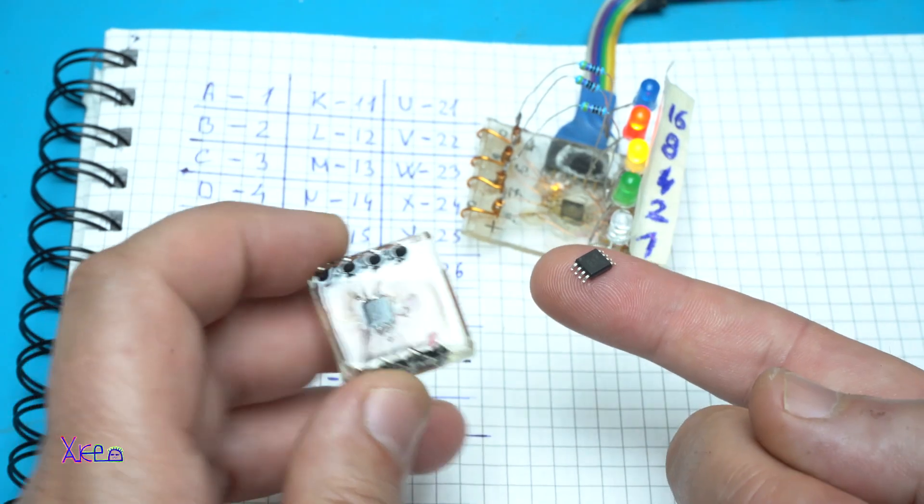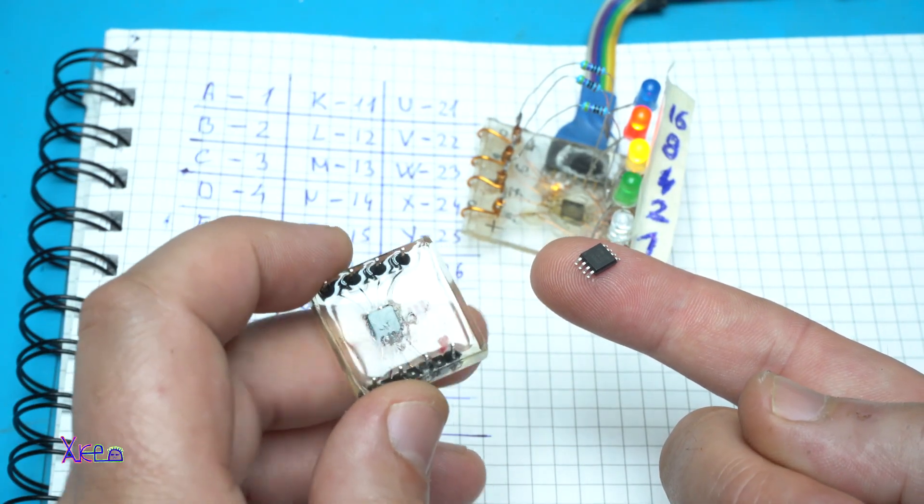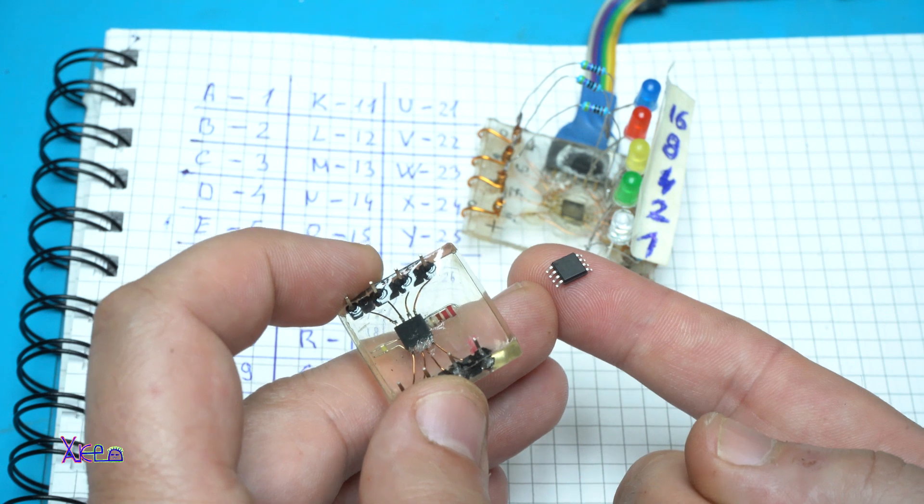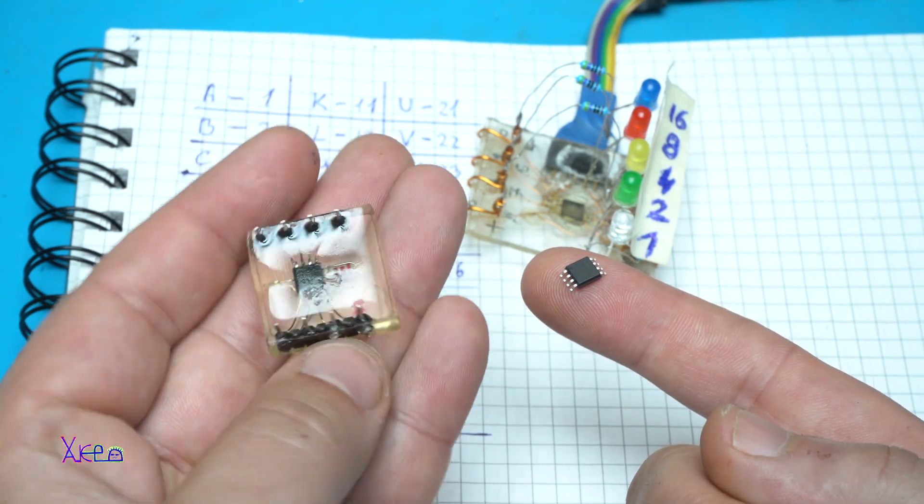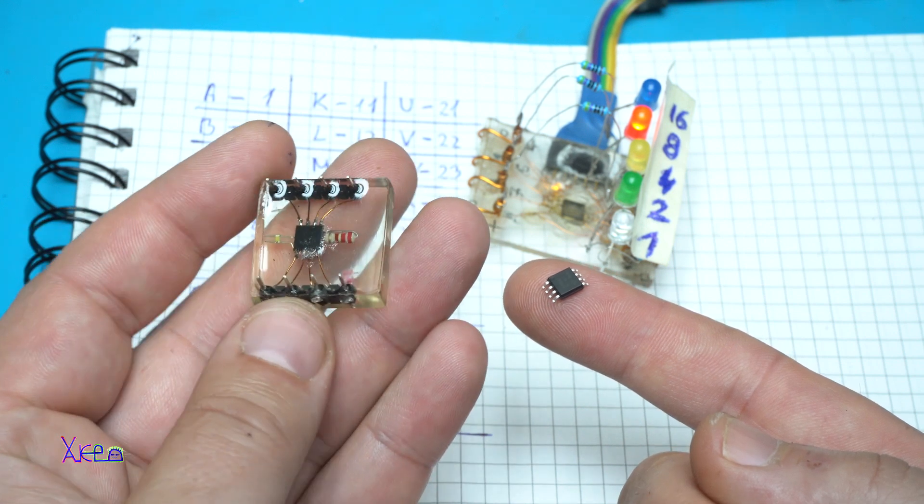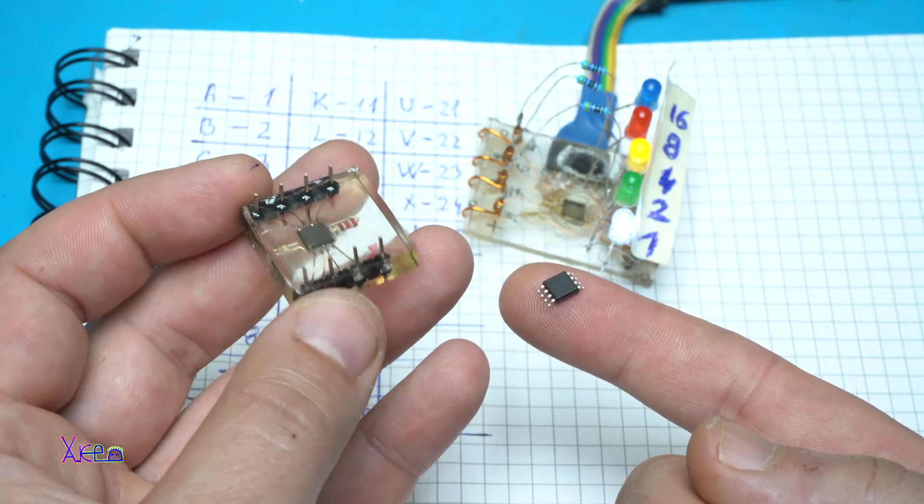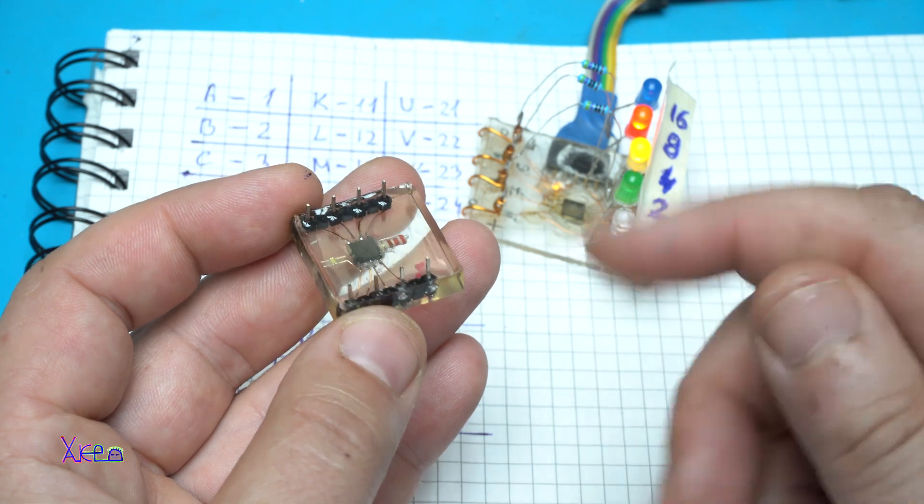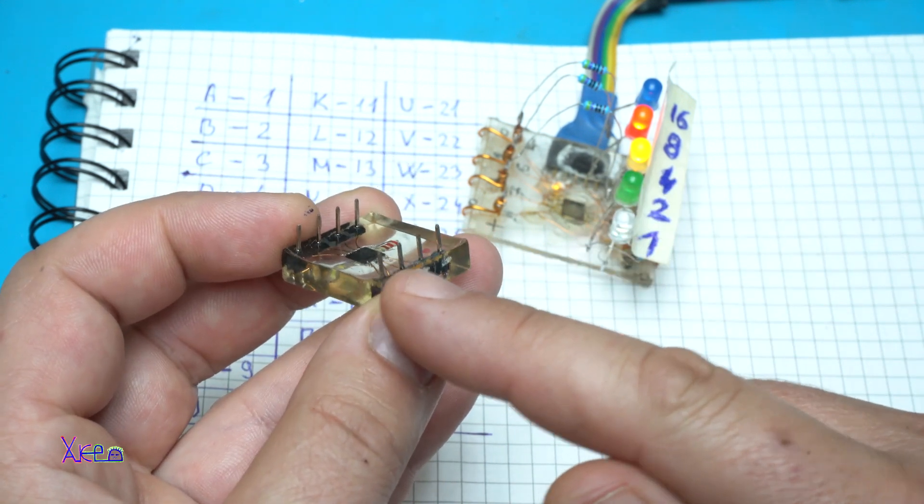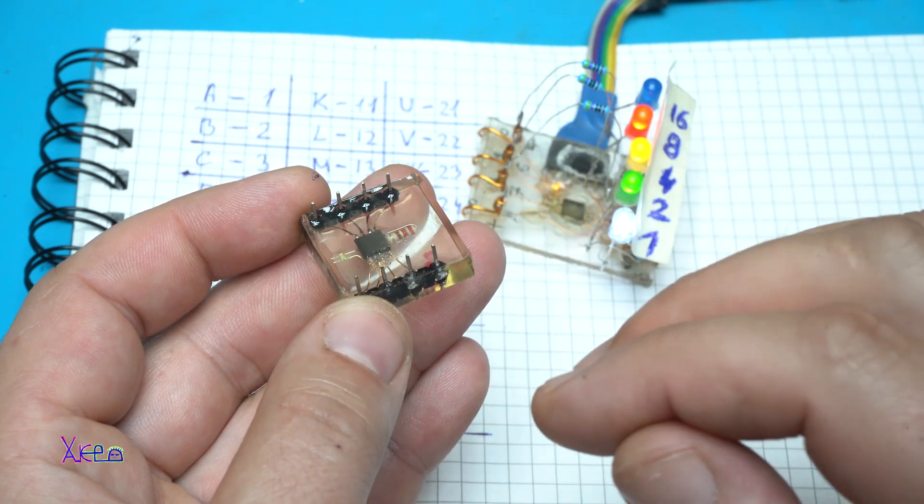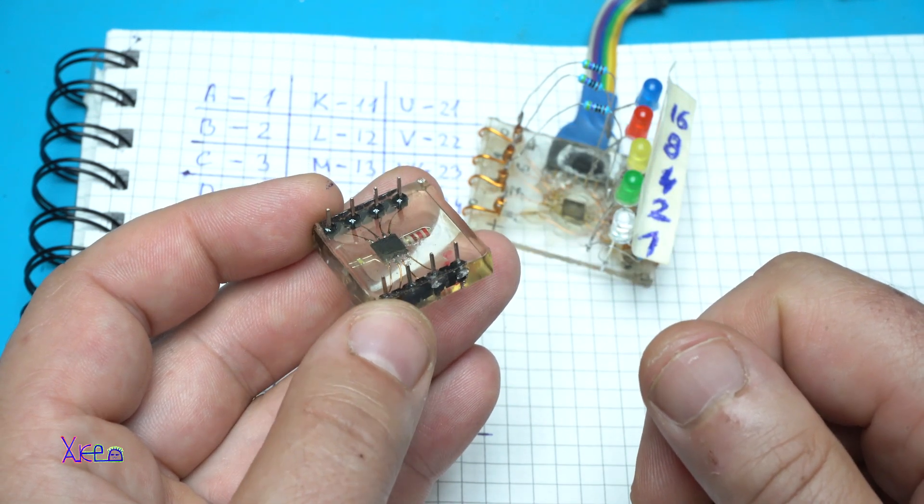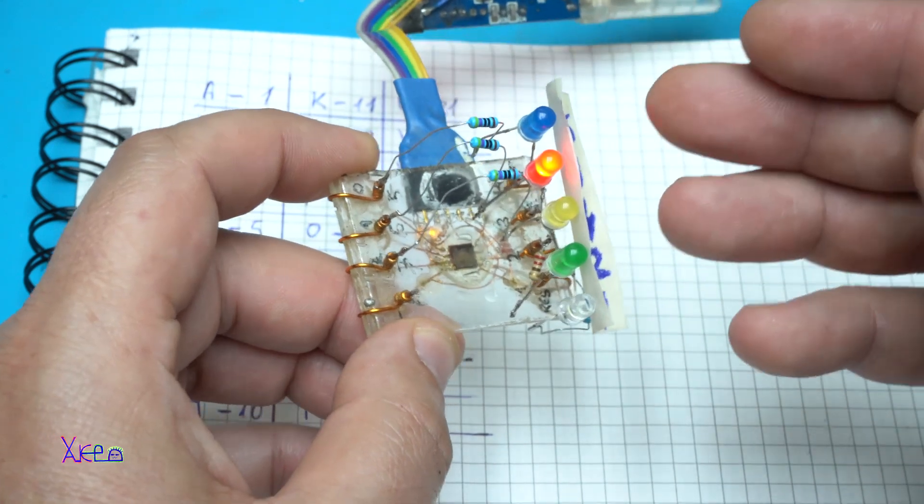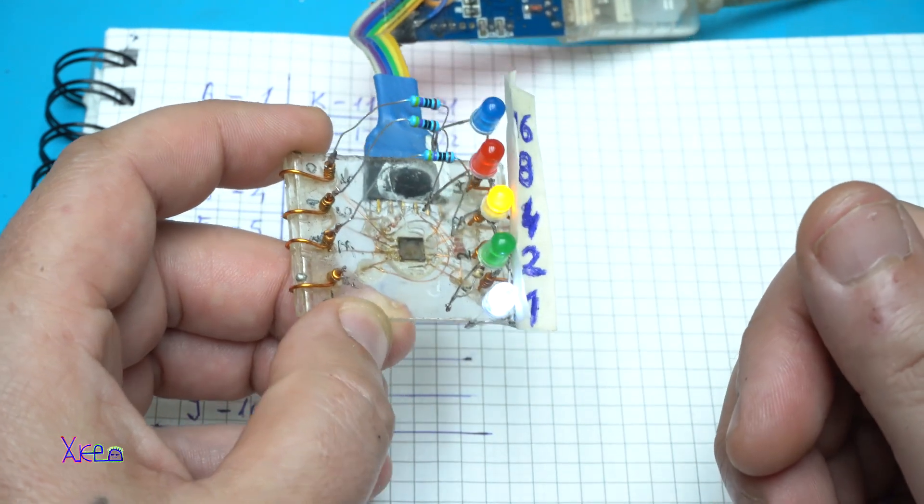On my finger I have an SMD ATtiny85 microchip that can be programmed using Arduino software. I'm holding it in epoxy resin. The SMD ATtiny85 microchip has eight pins - two for powering the chip positive and negative, one is reset on pin number one, and the rest five are digital outputs. I'm using those five digital outputs for controlling five independent LEDs.